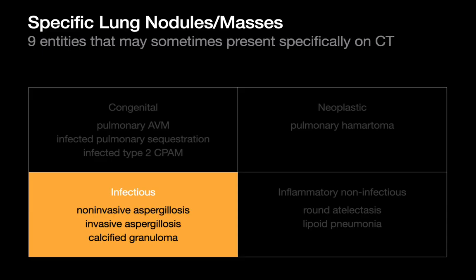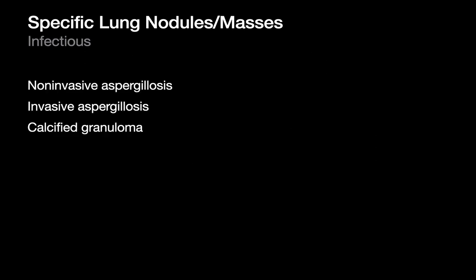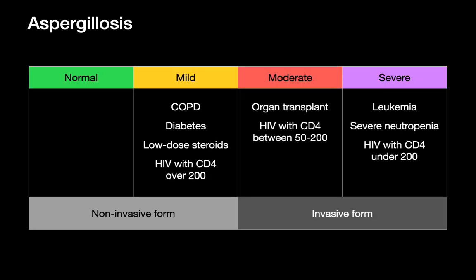There are three entities in the infection realm which can sometimes present specifically that we should be prepared to call on a CT scan: some occasions of non-invasive aspergillosis, some occasions of invasive aspergillosis, and the calcified granuloma. Aspergillosis takes basically two forms in terms of how it infects the lung. There's a non-invasive form which tends to occur in people with normal immune function or at least mild immunosuppression, and then a much more dangerous invasive form which tends to happen in folks who are moderately to severely immunosuppressed. Both of these forms can sometimes present specifically in the lung as a nodule or mass.